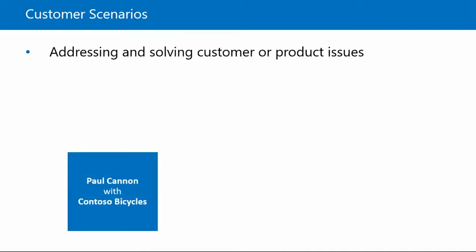Addressing and solving customer or product issues: Paul Cannon is a customer of Contoso Bicycles. He recently discovered that the suspension on his Contoso mountain bike is defective and not functioning correctly. Paul contacts Contoso Bicycles to discuss the issue and obtain help with his bike. This issue is logged in the mountain bike support request queue, and Rob is the mountain bike support specialist for Contoso Bicycles who receives the issue through Microsoft Dynamics 365. Rob will work with Paul to schedule a service activity to repair or replace Paul's suspension.